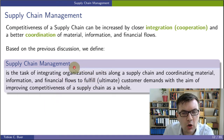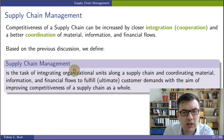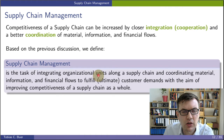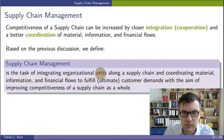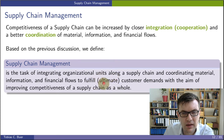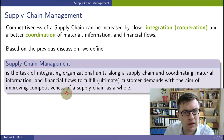We are not only looking at companies. We are writing here 'organizational units', which is a little bit more general than just a company. Organizational units can also include non-profit organizations or government organizations, for example. And the supply chain is looking at the ultimate customer's demands and wants to improve the competitiveness of the supply chain as a whole.